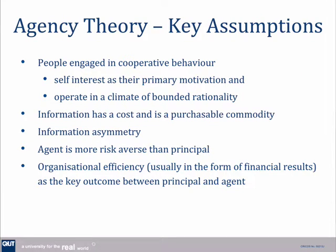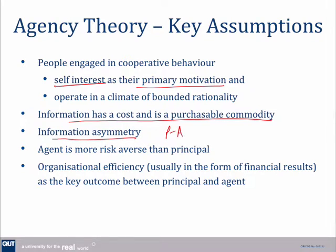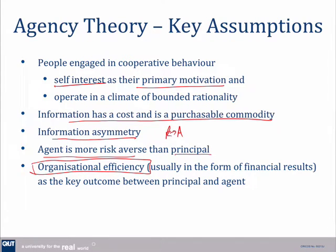Note though that agency theory is predicated on a number of assumptions: self-interest of both parties as their key motivation; information has a cost and can be purchased; there's a difference in information between the principal and the agent — an asymmetry; the agent is more risk-averse than the principal; and our key goal is organizational efficiency. If those assumptions break down, then the theory begins to break down. That's where we find some of the criticisms of agency theory and some of the other theories that we look at.